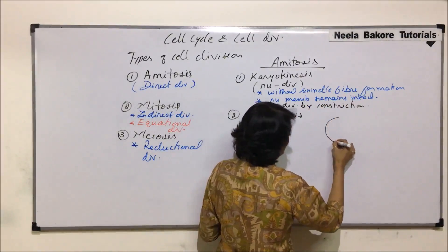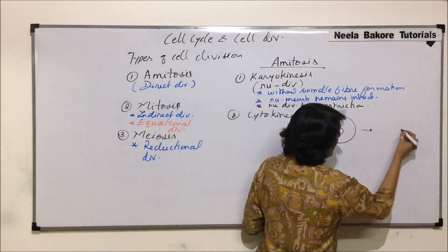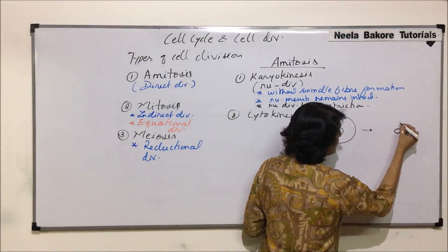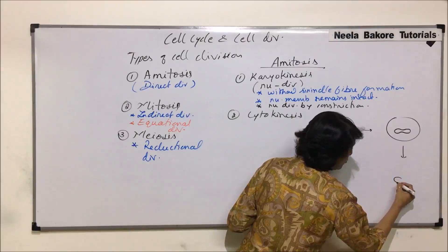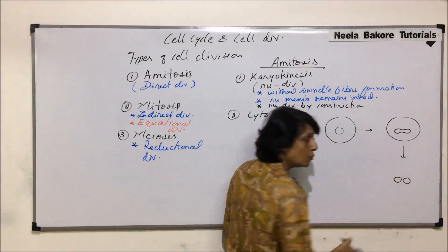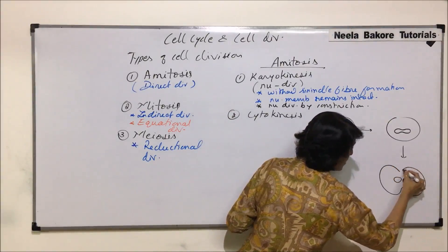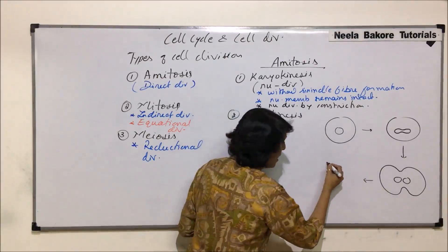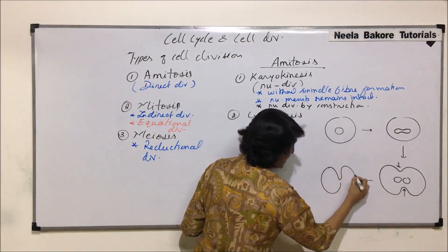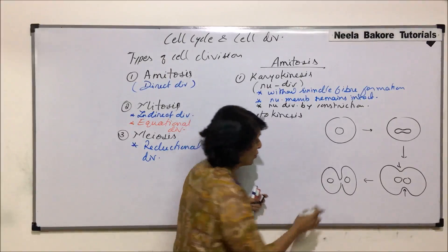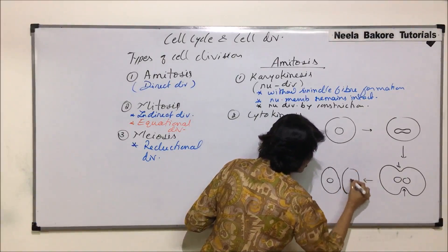So how does the nucleus divide? It divides by simple constriction. If we draw a cell — this is the cell and this is the nucleus — a constriction appears in the nucleus, and the nucleus divides by constriction into two. Simultaneously, the cytoplasm also starts showing constriction, getting deeper and deeper, and two daughter cells are formed.